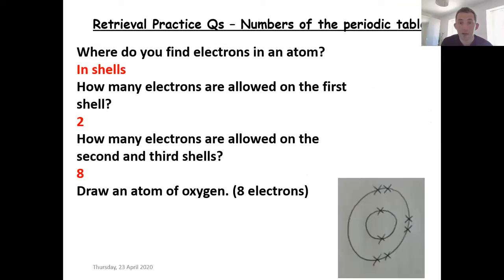How did you get on guys? The bottom question, draw the oxygen, should have six electrons like this, six together, three pairs. It doesn't matter where you put them as long as there's six in that ring, that's absolutely fine.